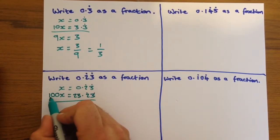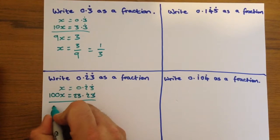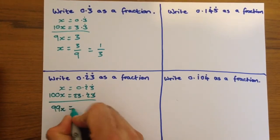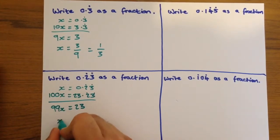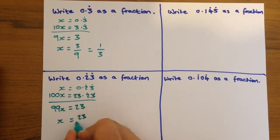Again, we're going to subtract these two values, so 100x take away x leaves you with 99x equals 23. Divide through by 99, x equals 23 over 99.